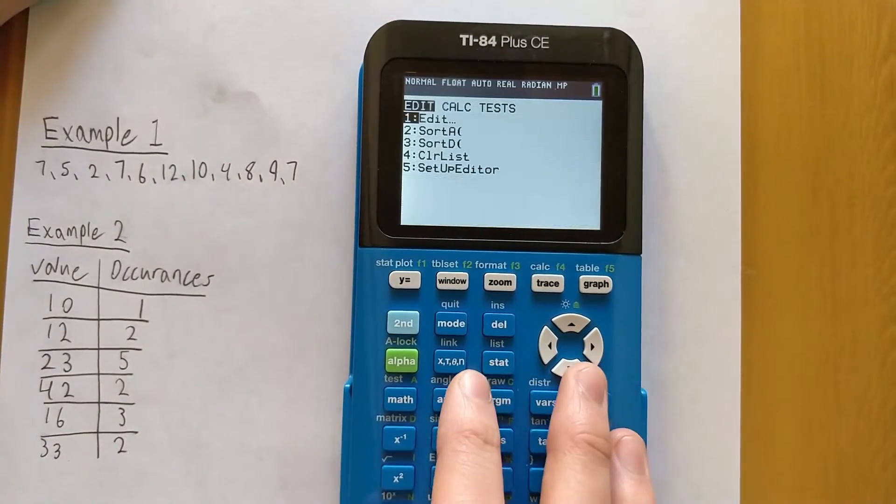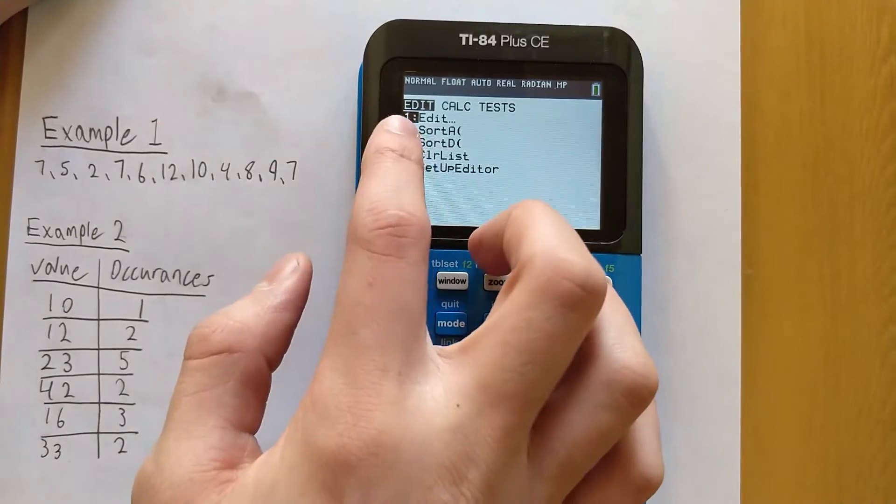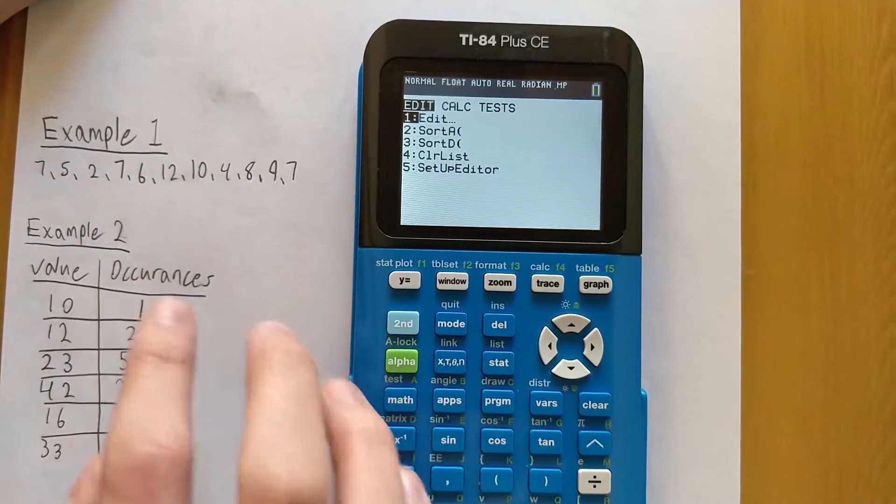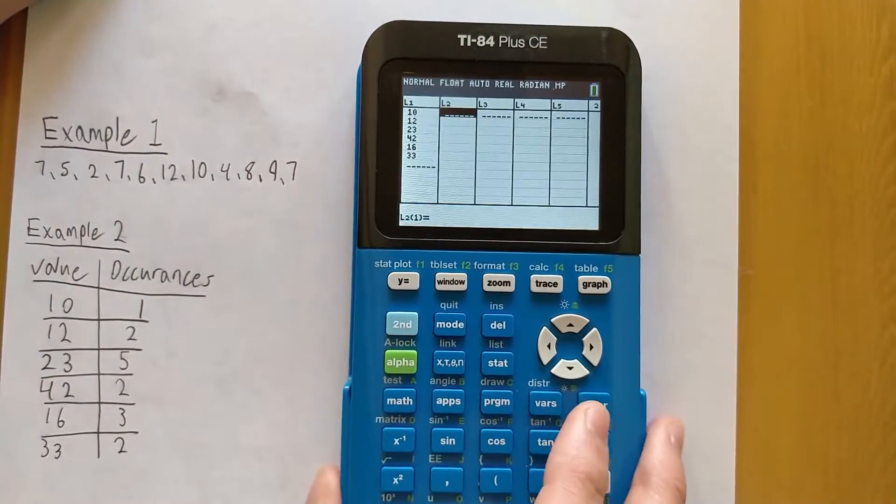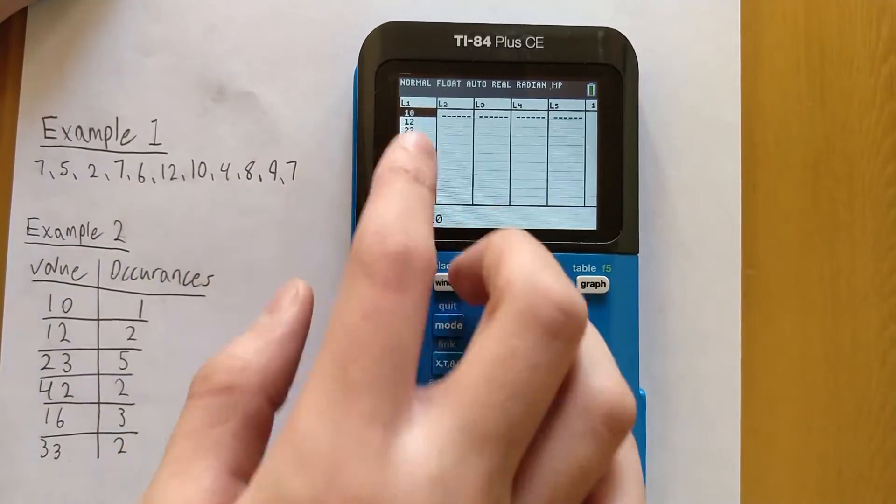To get started, press the STAT button and then the first option here, which is Edit, is where we type in our lists. Let's just press Enter and we want to type in all of our list values in L1.